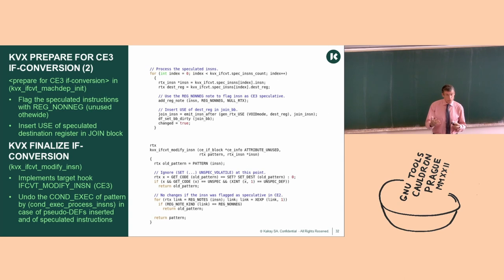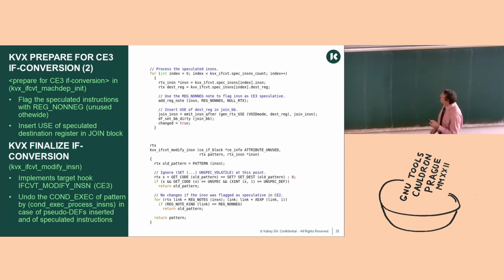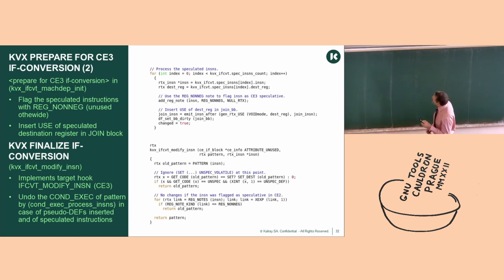The second target hook is ifcvt_modify_insn. Here we receive the pattern proposed by the if-converter. We ignore things we introduced to extend live ranges — they will be removed later. If the instruction is flagged as speculated, we return the old pattern without wrapping it in cond_exec. Otherwise we accept the new predicated pattern.